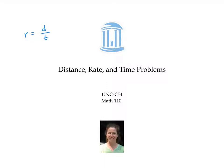For example, if you're driving 60 miles an hour, that's your rate. And that's because you're going a distance of 60 miles in one hour. Sometimes it's handy to rewrite that relationship by multiplying both sides by t. And that gives us that r times t is equal to d. In other words, distance is equal to rate times time.